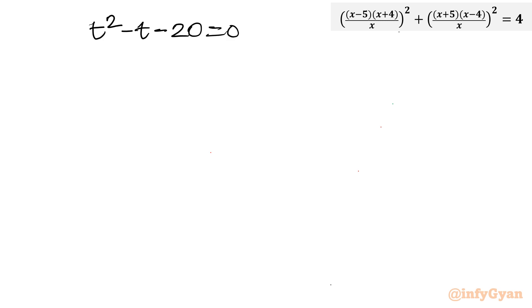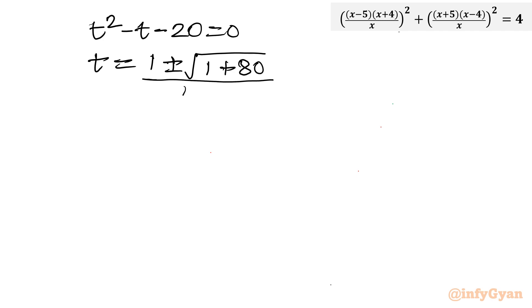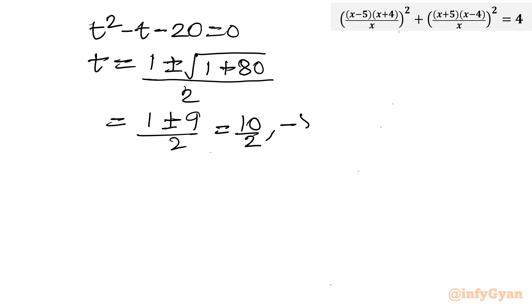Factorizing or applying the Sridharacharya formula: t equals [1 plus or minus square root of (1 plus 80)] over 2, which is [1 plus or minus 9] over 2. Taking the plus sign gives 10 over 2 equals 5; taking the minus sign gives minus 8 over 2 equals minus 4. So t equals 5 or t equals minus 4.